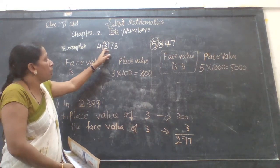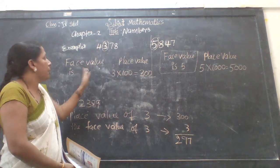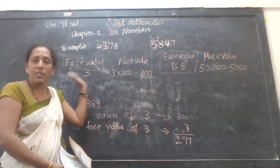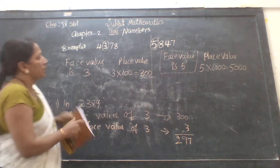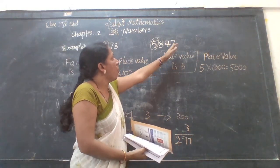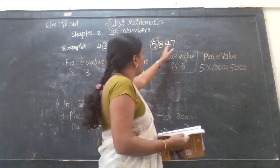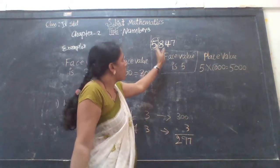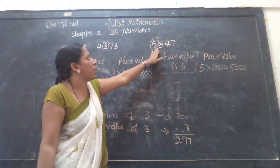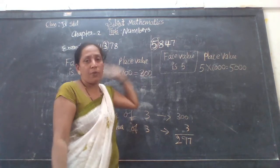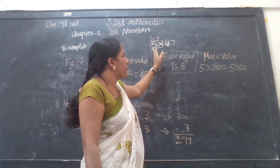Next, see the number 5,847. I have circled the digit 5. The face value of 5 is 5 itself. Now, in which position is 5? It is in the thousands place. So 5 × 1,000 = 5,000. The place value of 5 is 5,000.